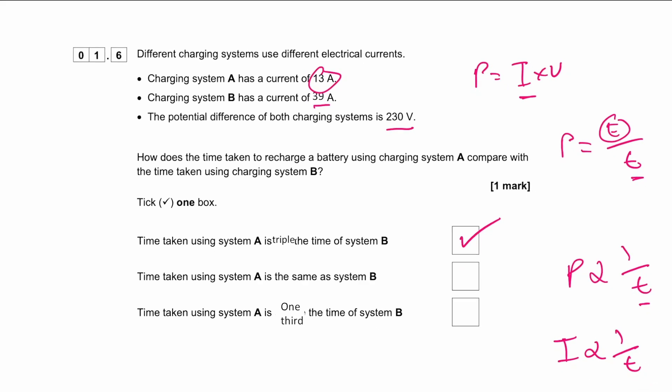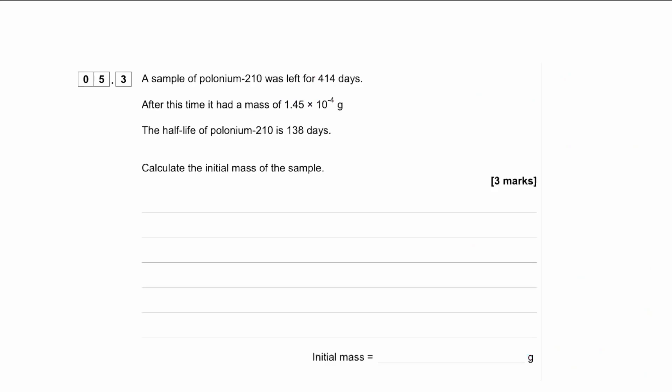System B has three times the current of system A, so it'll be three times faster — it takes one third of the time. Therefore A takes three times as much time as system B. Moving on, we're going to touch on atomic structure and nuclear physics. A sample of polonium-210 was left for 414 days. After this time it had a mass of 1.45 times 10 to the minus 14 grams. The half-life of polonium-210 is 138 days. Calculate the initial mass of the sample.